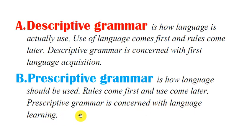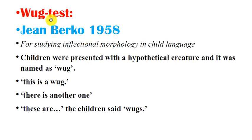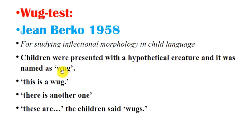What is the Wug test? The Wug test was conducted by Jean Berko in 1958 for studying inflectional morphology in child language acquisition. Children were presented with a hypothetical creature named 'wug.' They were told: 'This is a wug. There is another one. These are...' and the children said 'wugs.'